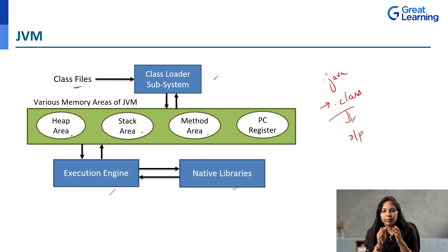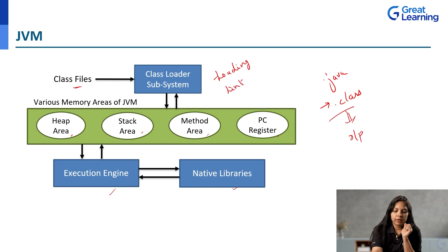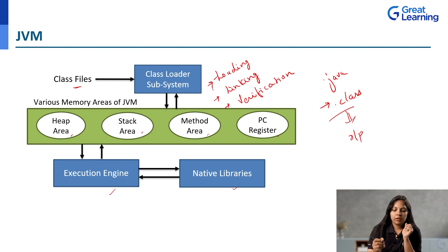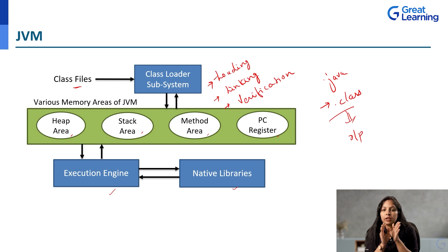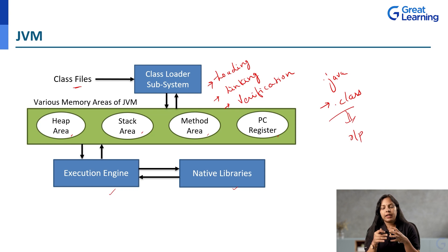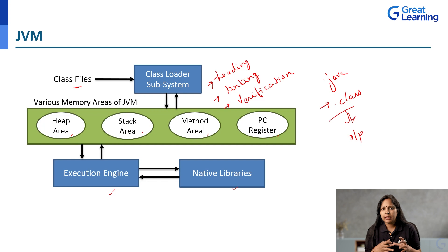The class loader subsystem performs three steps: loading, linking, and verification. Loading means it loads the .class file to the JVM. In technical terms, loading gives the JVM information related to the .class file — for example, whether there is any enumeration present, what is the parent class, or if there is a child class linked to it. All that information is given to the JVM — that is loading.